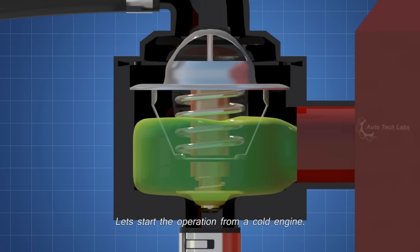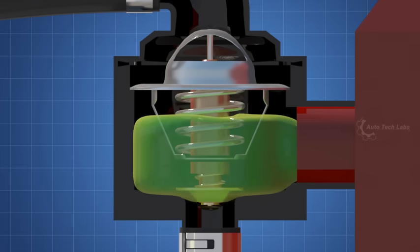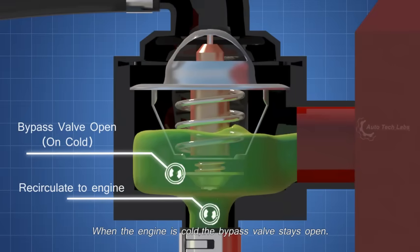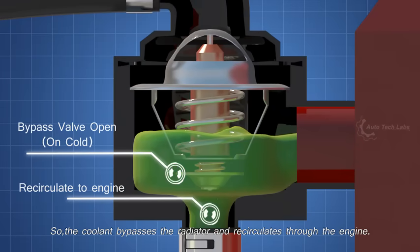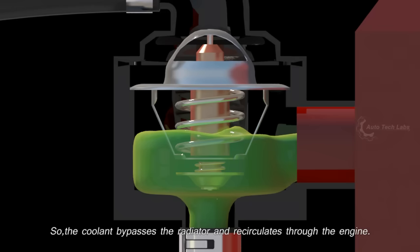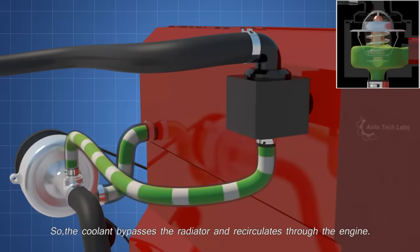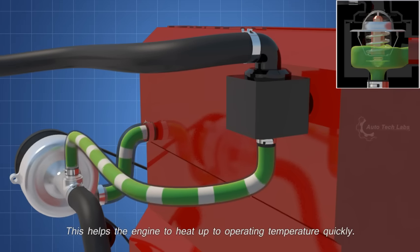Let's start the operation from a cold engine. When the engine is cold, the bypass valve stays open. So the coolant bypasses the radiator and recirculates through the engine. This helps the engine to heat up to operating temperature quickly.